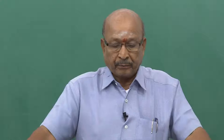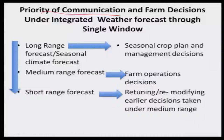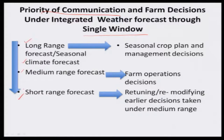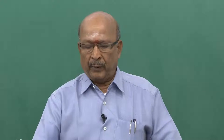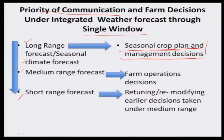Now I have put in a figure, a priority of communication: farm decisions under integrated weather forecast through a single window. Single window means IMD — India Meteorological Department. The sequence is: long range or seasonal forecast, then medium range, then short range. When long range is given, seasonal crop, land, and management decisions are made — this is very, very important. Our farmers are yet to come to take decisions like this, but in other countries — especially Australia, America, and European countries — once seasonal rainfall is informed, people undertake such activities. Thereby you can reduce your risk and also increase your input efficiency.